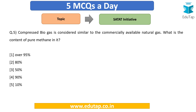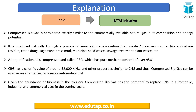Question number five: Compressed biogas is considered similar to commercially available natural gas, that is CNG. What is the content of pure methane in it? Options are: over 95 percent, 80 percent, 50 percent, 90 percent, or 10 percent? The answer is option one — over 95 percent. Compressed biogas is considered exactly similar to commercially available natural gas and is produced naturally through the process of anaerobic decomposition from waste and biomass.